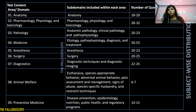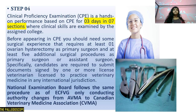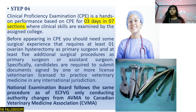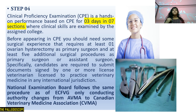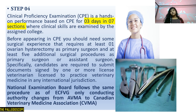In the question distribution, medicine has the most questions at 50 to 55, followed by pharmacology, physiology, and toxicology. Step 4 is the CPE — a hands-on, performance-based examination conducted over three days and seven sections where clinical skills are assessed. Before appearing in CPE, candidates need surgical experience: at least one ovariohysterectomy as primary surgeon, plus at least five additional surgical procedures as primary or assistant surgeon. Candidates must submit documents signed by one or more licensed veterinarians.